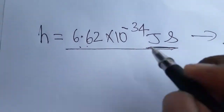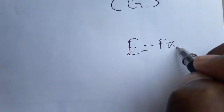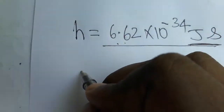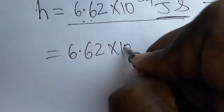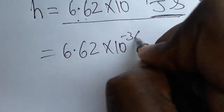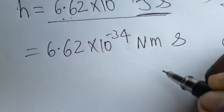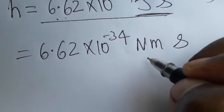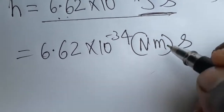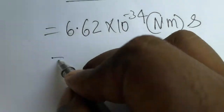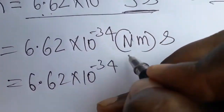Before converting, you should know that one joule equals force into displacement, that means newton meter. So h equals 6.62 into 10 power minus 34 newton meter second. We are going to convert this together into the CGS system.